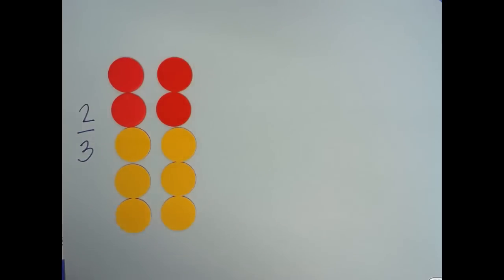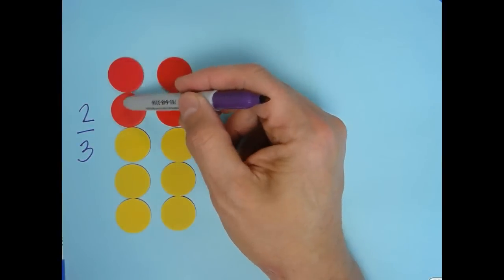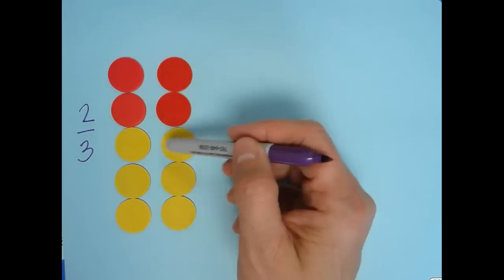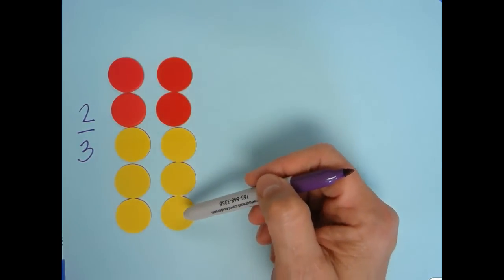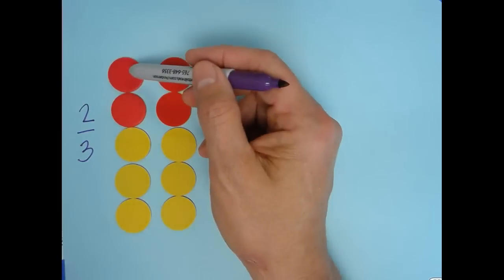Here we have another ratio which is really the same ratio. We could say this is four red to six yellow. However, if we reduce that down, it still becomes a ratio of two to three.